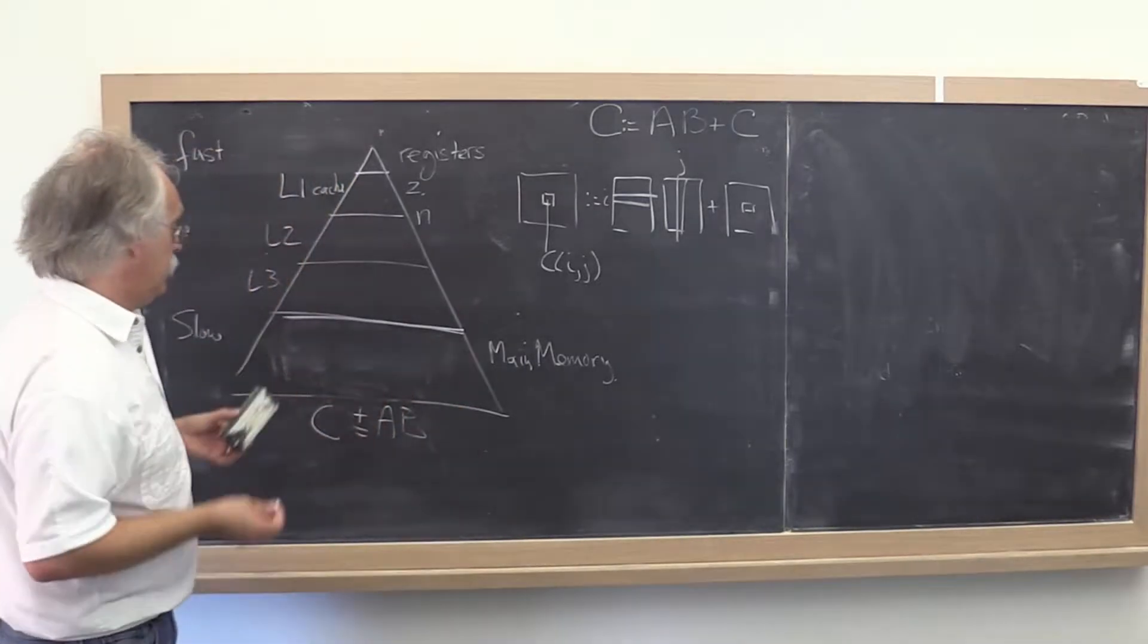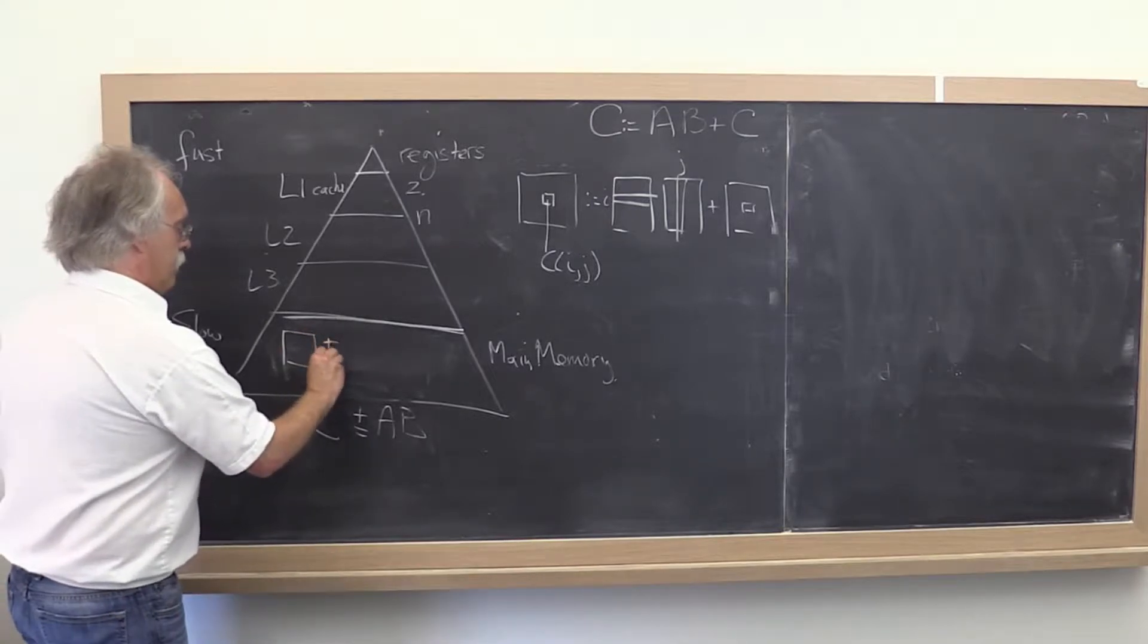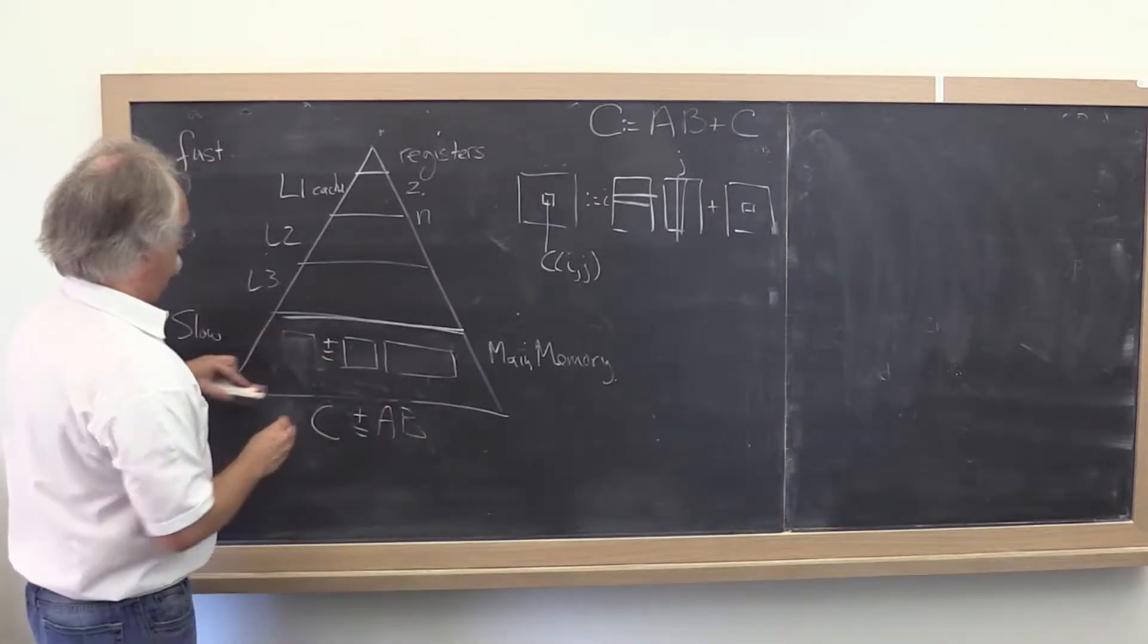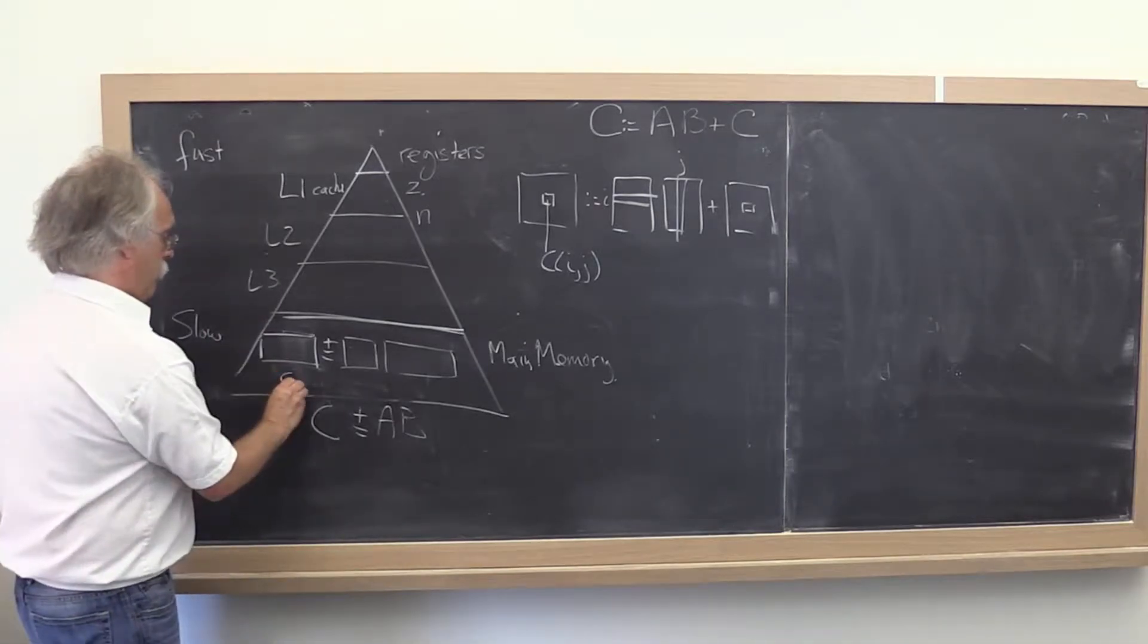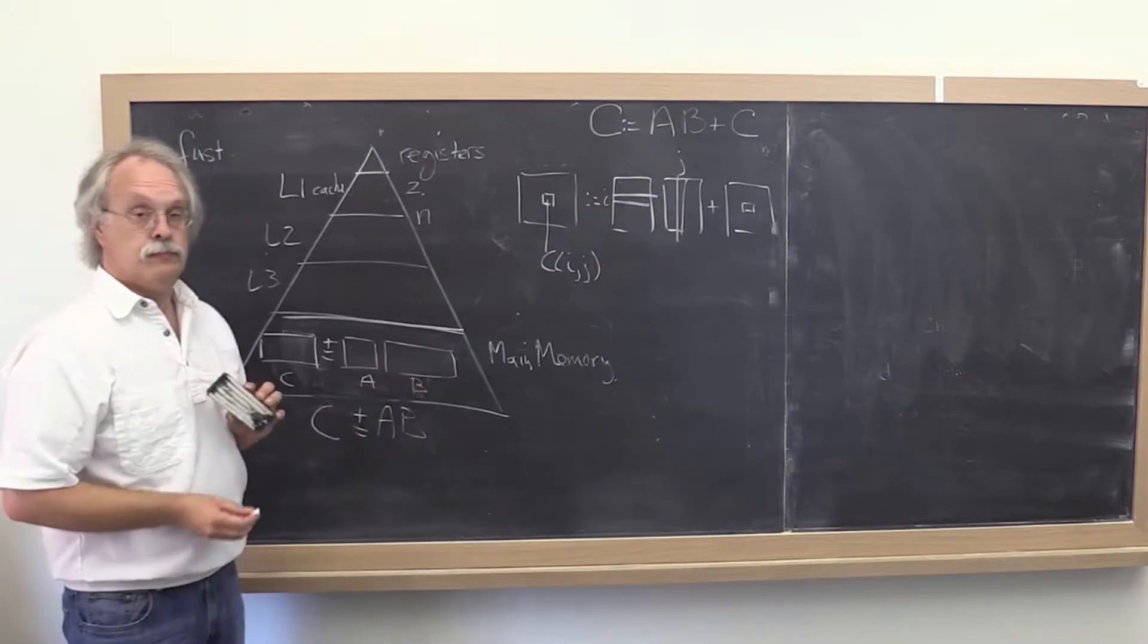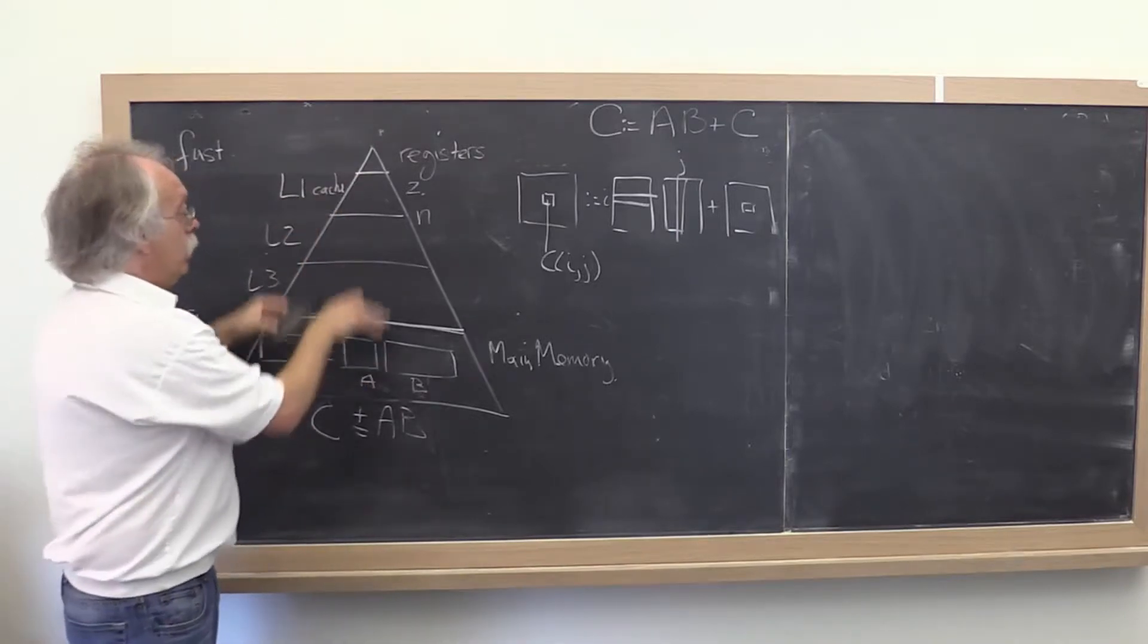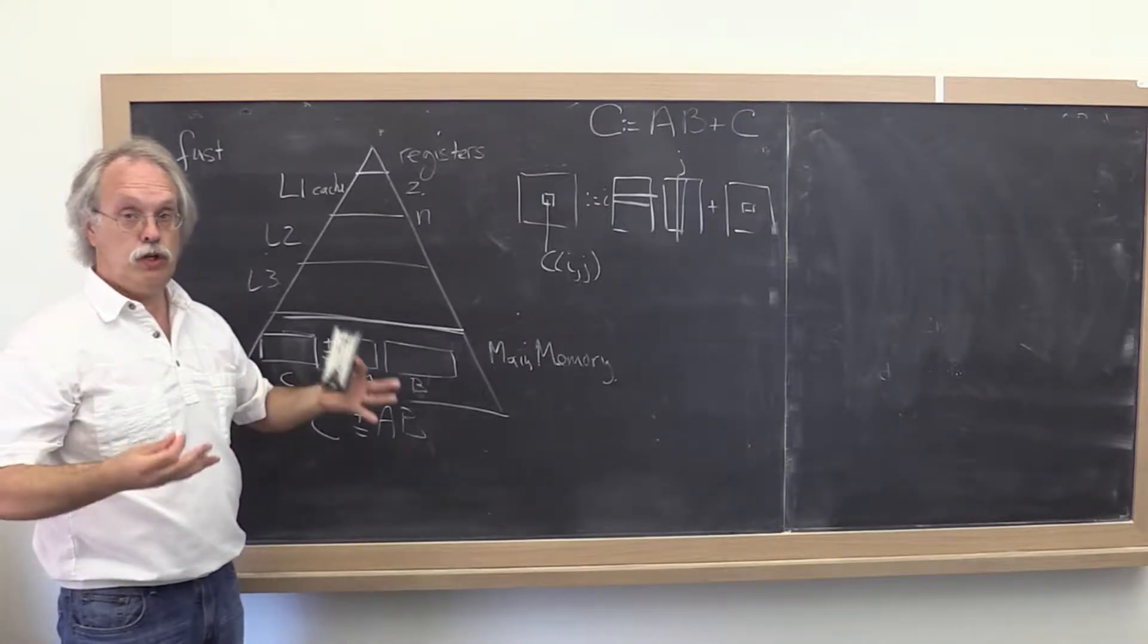How does this work? Well, you start with a matrix-matrix multiply in main memory. C, A, and B. Now, typically these matrices are too big to fit in the L1 cache. You can't just go read them, do a bunch of computation, and write the result back out.